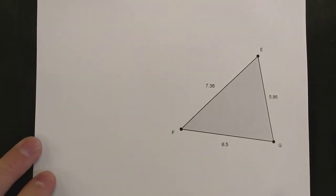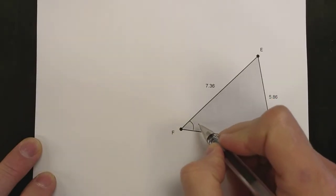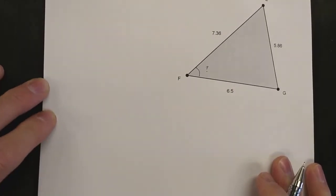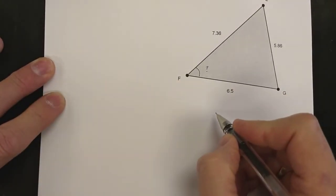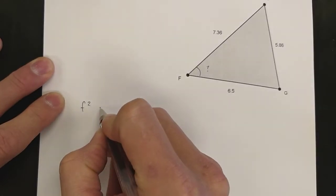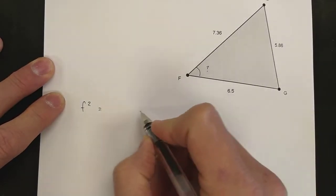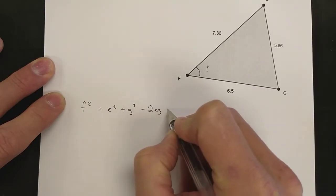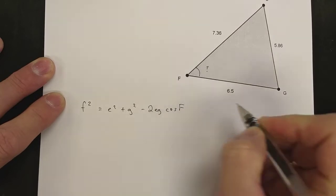We also might be asked to solve for an angle, if we have all three side lengths. For example, find what is angle F. Cosine law will do that for us as well. If we're asked to solve for F, we need to use an equation that has cos F at the end of it, and that also will start with F squared.